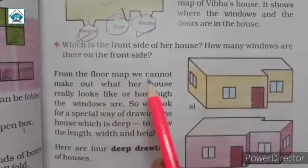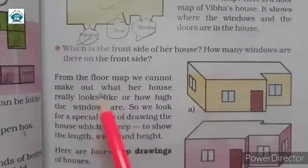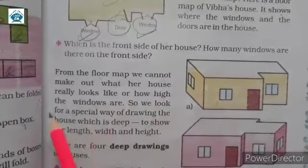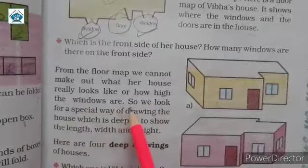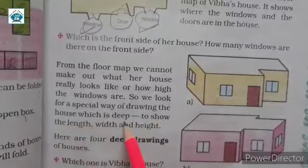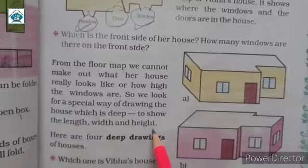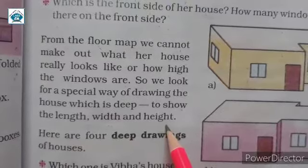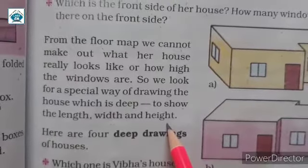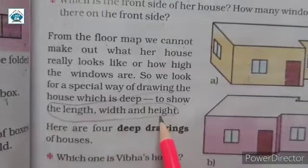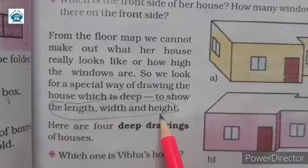From the floor map we cannot make out what her house really looks like or how high the windows are. So we look for a special way of drawing the house which is deep to show the length, width and height.